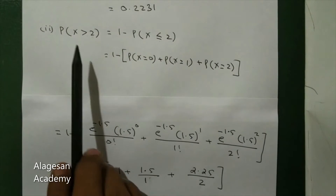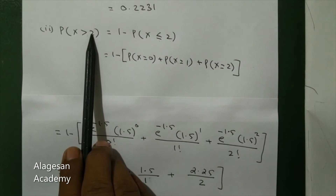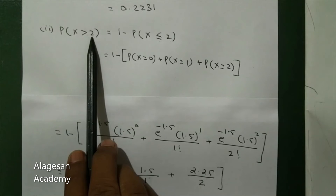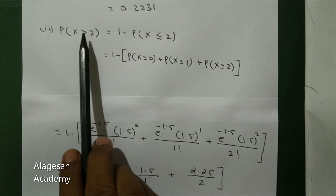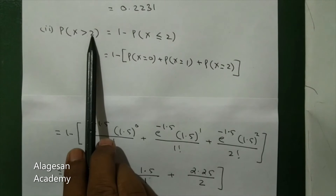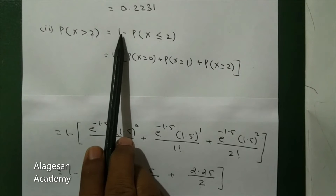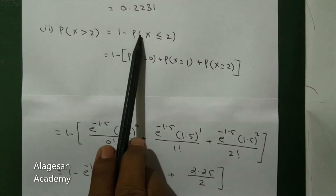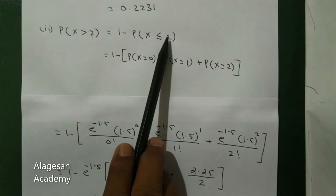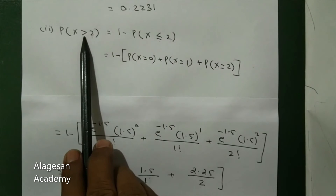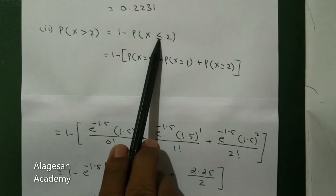Second question: P of X greater than 2. For Poisson distribution, greater than cases we cannot compute directly. So P of X greater than 2 equals 1 minus P of X less than or equal to 2.